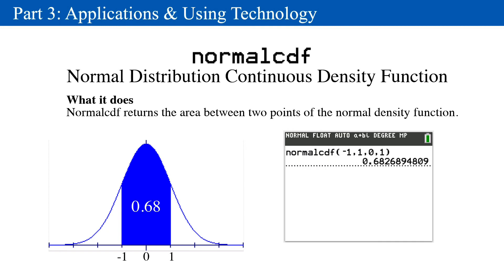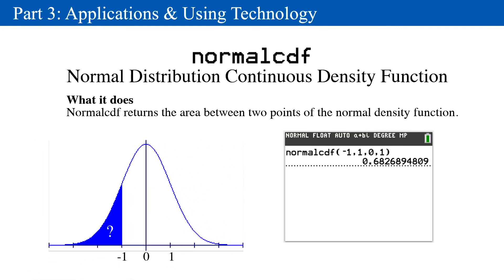Here's a second example. From the left tail to negative 1, you can enter negative 100 because you can't enter negative infinity, and it's far enough down the x-axis that it provides accurate enough results.